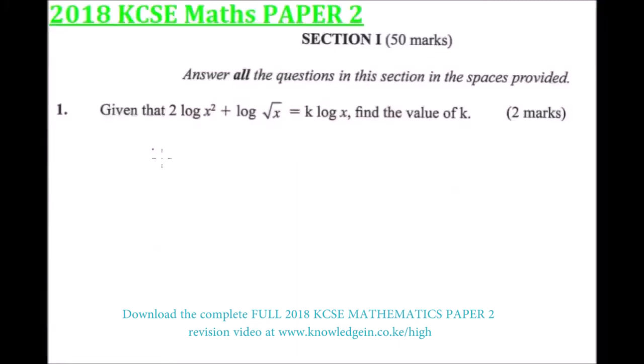This is 2018 KCSE Maths Paper 2, question number 1, in section A, where you are supposed to answer all the questions on the space provided. Question number 1: given that 2 log x squared plus log square root of x equals k log x, find the value of k.